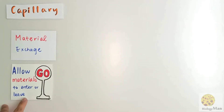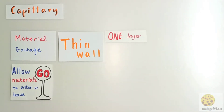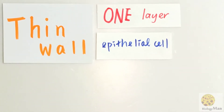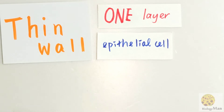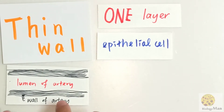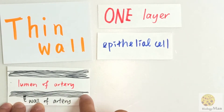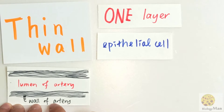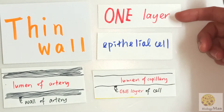So let's take a look at how capillary adapts to these criteria. In order to fulfill the first criteria, the capillary must have a thin wall. It is formed by one layer of epithelial cells. Without comparison, you won't know how thin the wall is, so I would like to compare it with the wall of an artery. In the artery, there are so many layers of cells forming the wall, whereas the capillary has only one layer of epithelial cells.